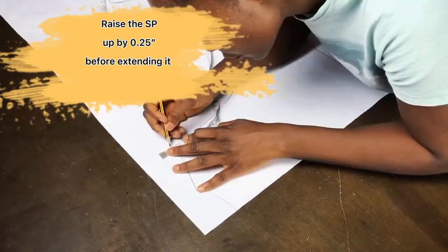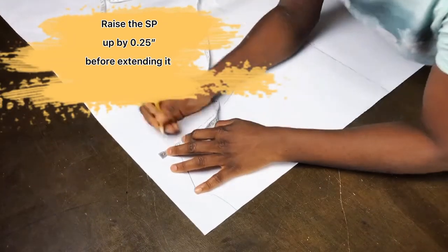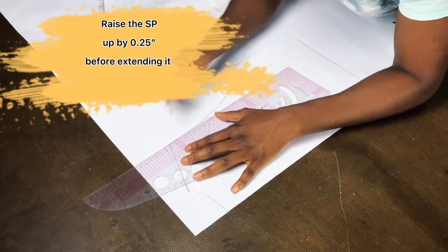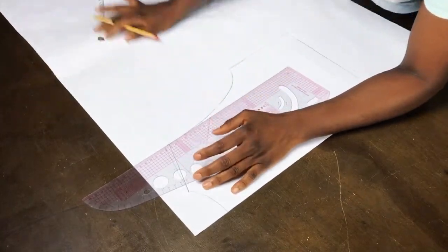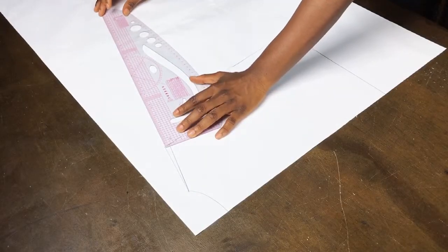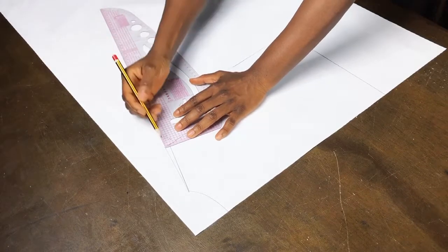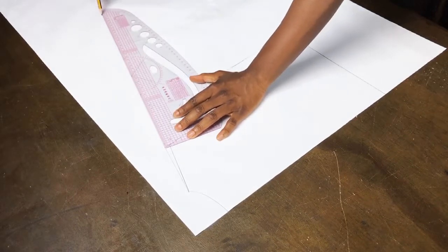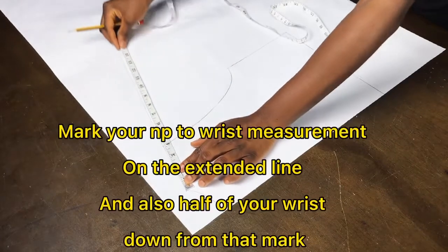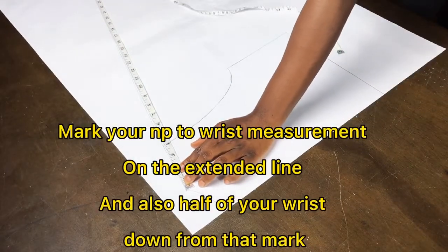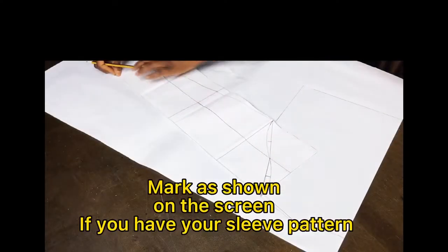After tracing extend the shoulder point out or use your basic sleeve block with no elbow shaping. If you don't have your sleeve pattern what you can do is to measure from your neck point to your wrist and mark that along the line that you extended.